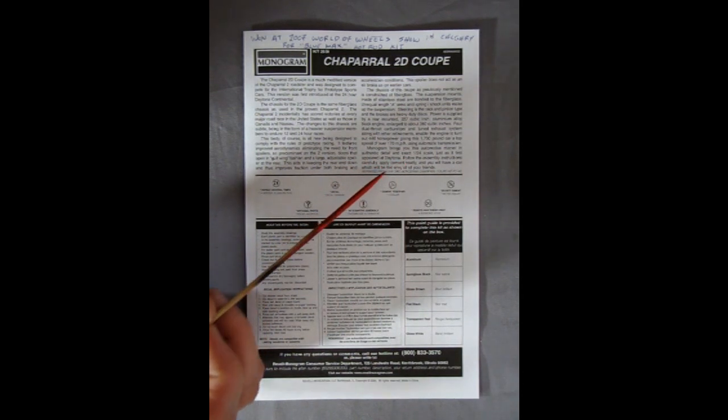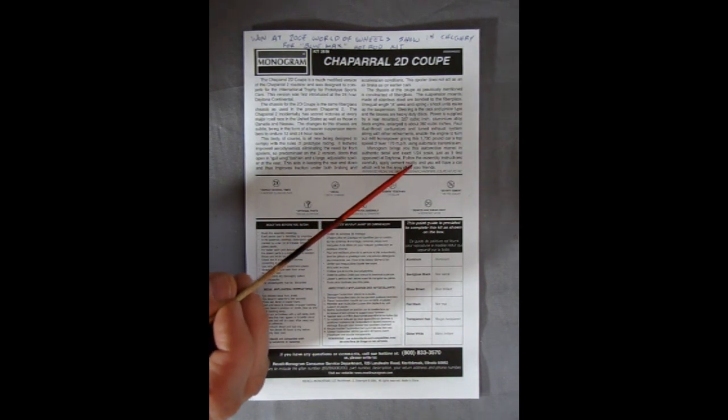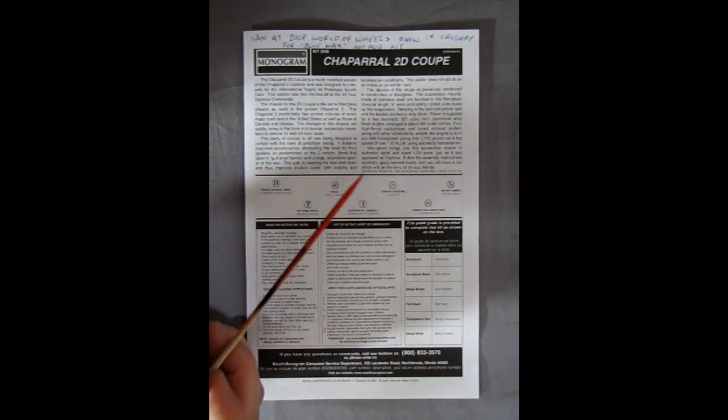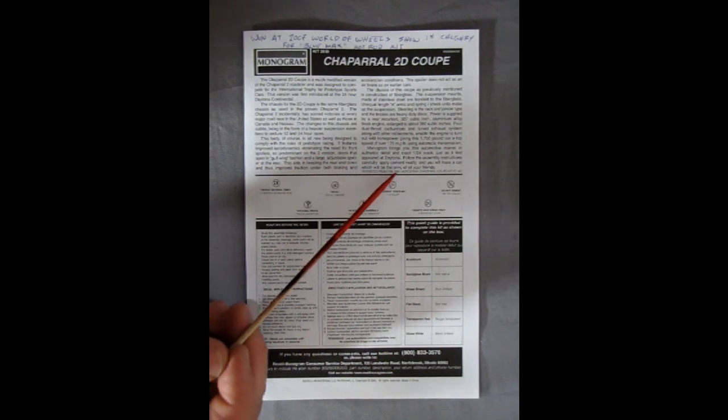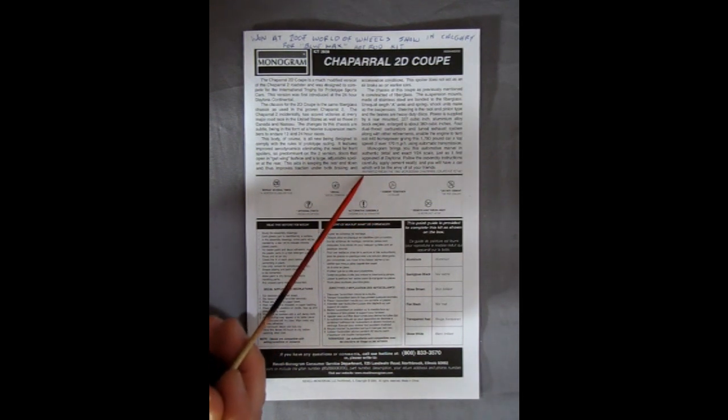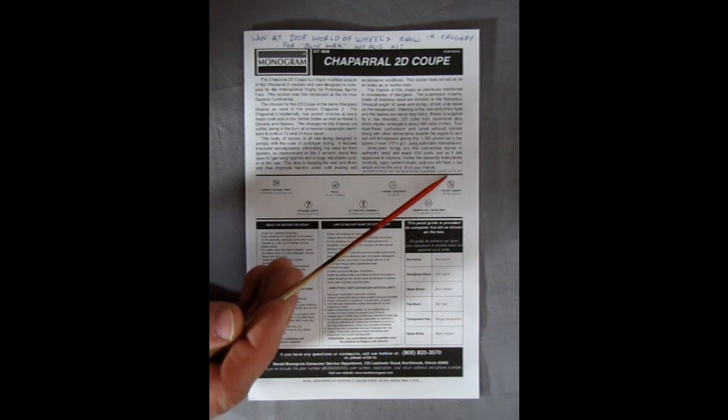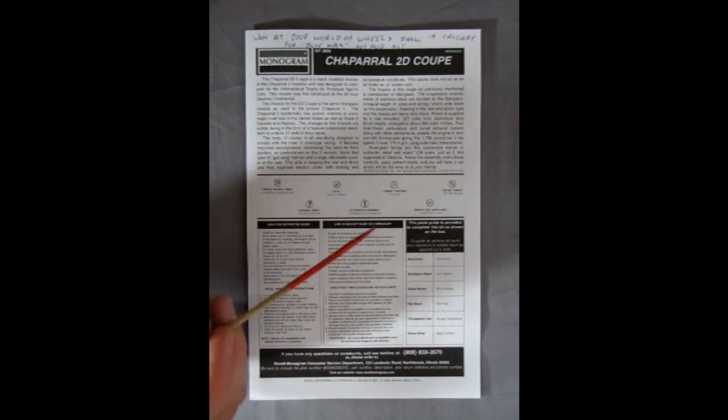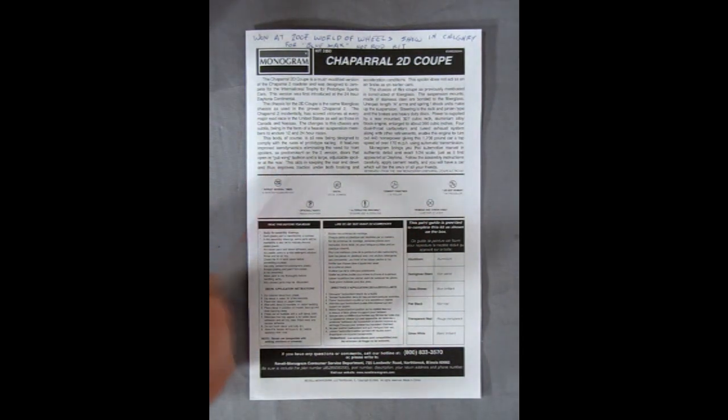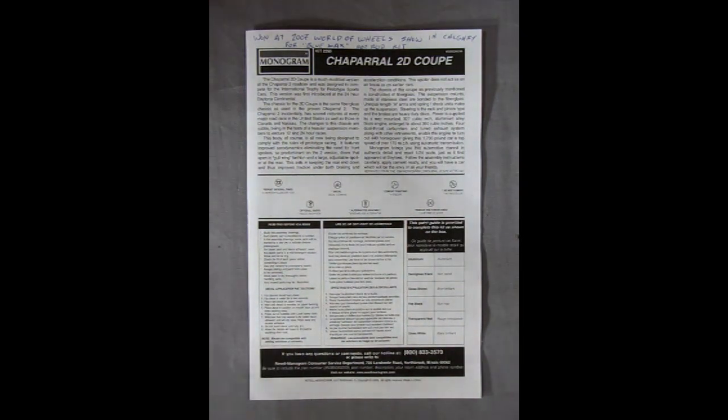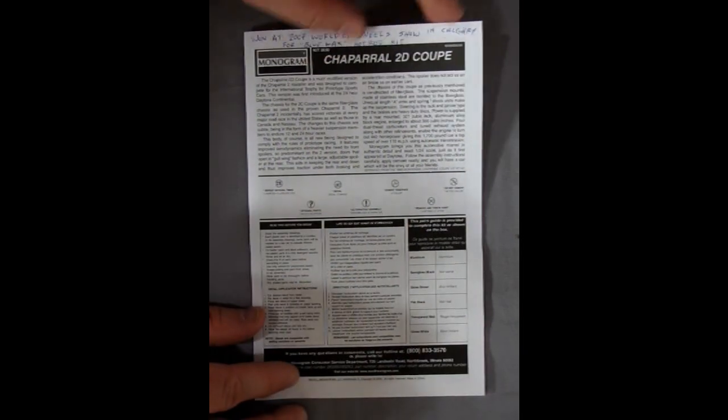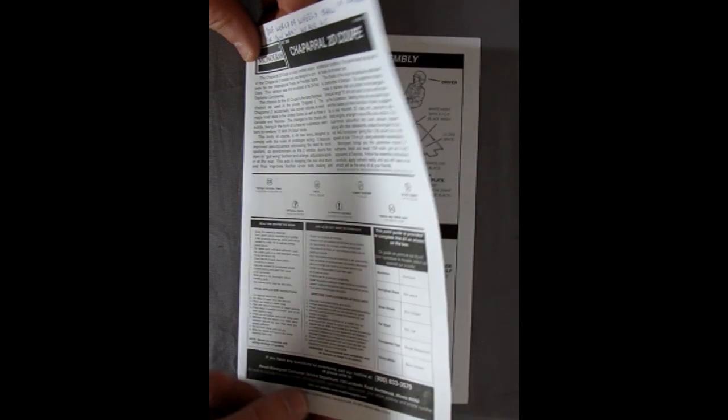Okay, Monogram brings you this automotive marvel in authentic detail, an exact 1:24 scale, just as it first appeared at Daytona. So, follow the assembly instructions carefully, apply cement neatly, and you will have a car which will be the envy of all your friends. Reprinted from the 1966 Monogram Chaparral Coupe kit. Okay, so I'm reading that uphill, so if I'm a little bit stuttery, try reading vertically.